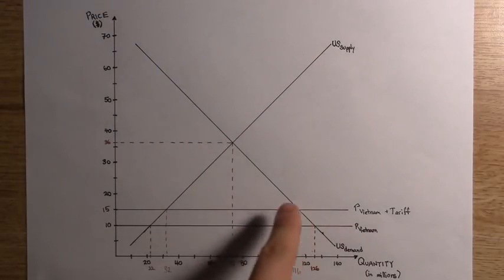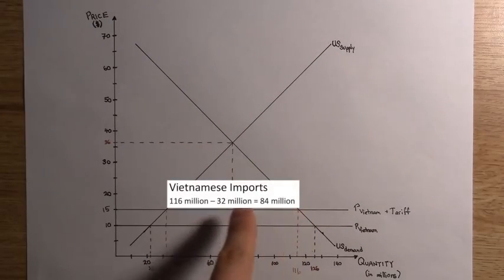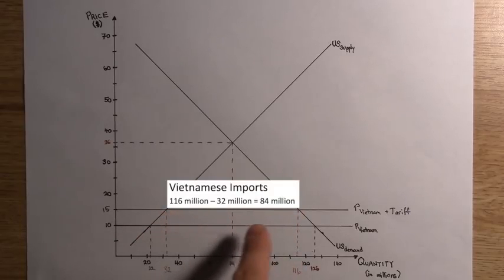Now, the imports from Vietnam will now only be 84 million shirts, which is fewer than the 104 million shirts that the U.S. imported before the tariff.